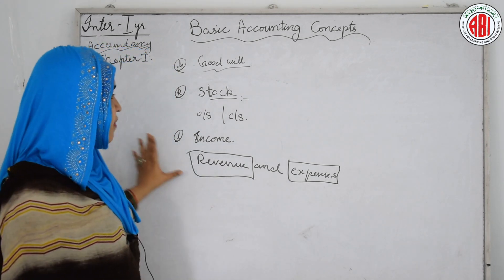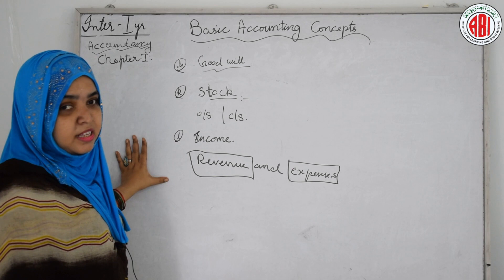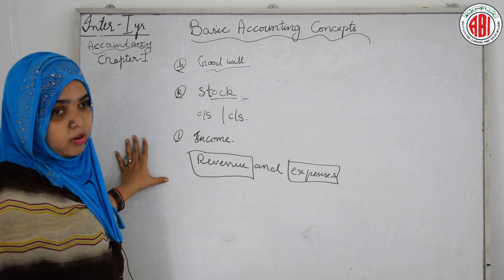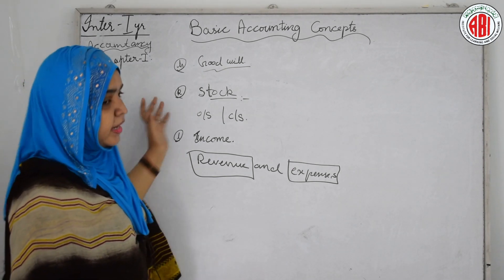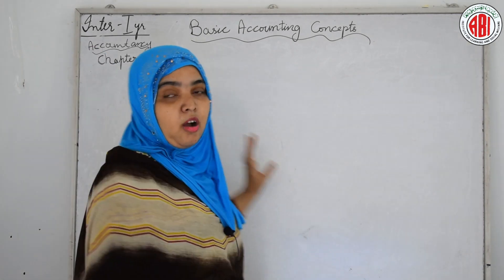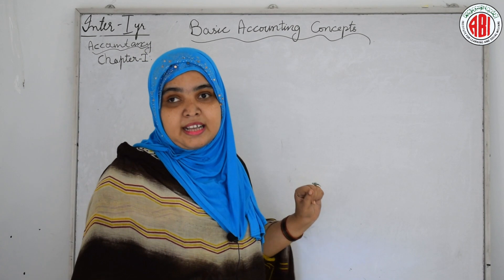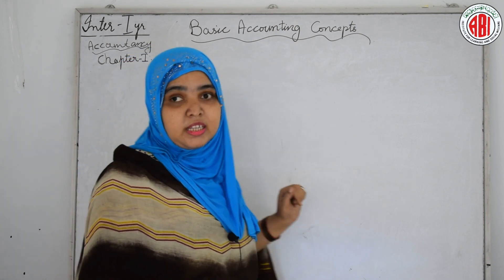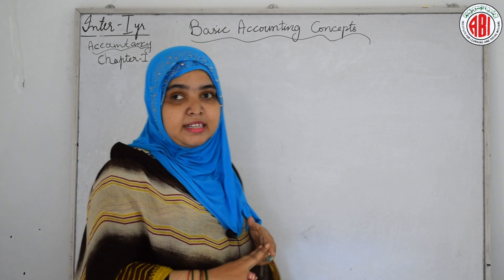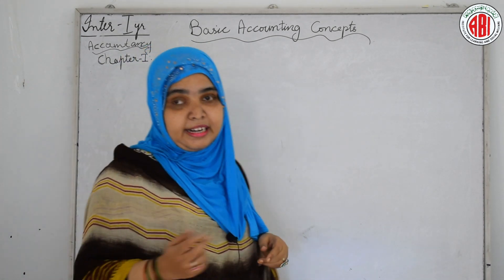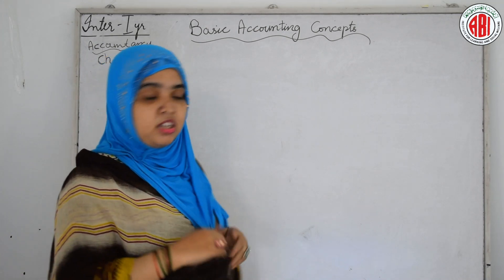I hope that you have understood the basic accounting concepts which the businessman has to come across while learning accounting. To recap — what is an account? An account is a brief history of recording business transactions in a book of accounts. It has two sides: debit side and credit side, and it is normally in T-shape.